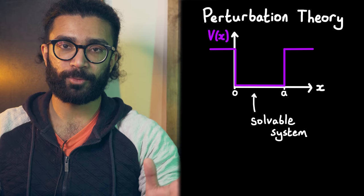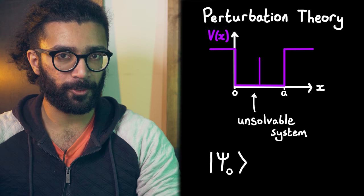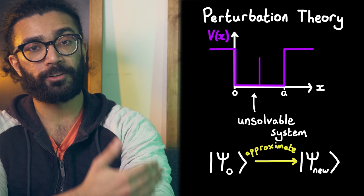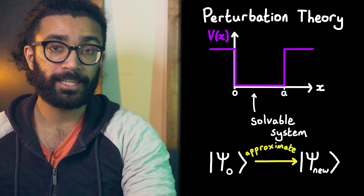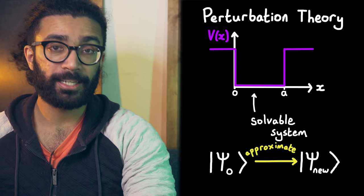The idea is to take a system that we do know how to solve — in other words, one where we can find the wave function — and then slowly perturb or modify it to match the one we're trying to solve for. Interestingly, we can approximate the allowed wave functions in terms of the allowed wave functions of the original system. Perturbation theory works best when the new system is close to the original one and can be thought of as the original system plus some small change. The smaller, the better.